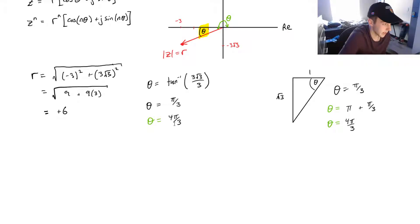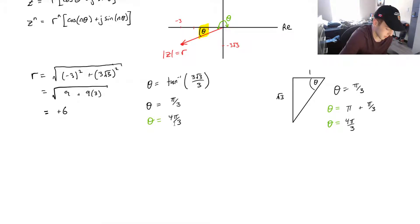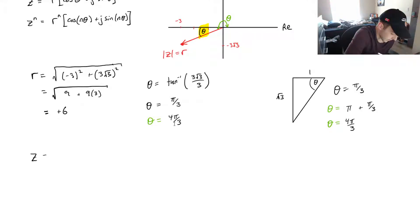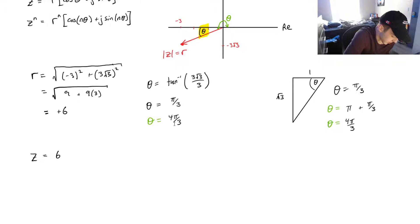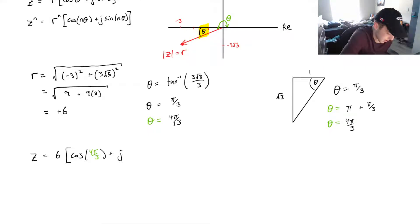That makes sense looking at our diagram. So let's put this into polar form. This value of z is equal to 6 times (cos(4π/3) + j sin(4π/3)).